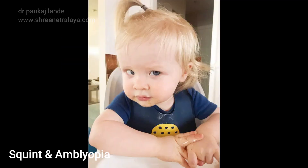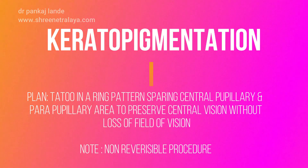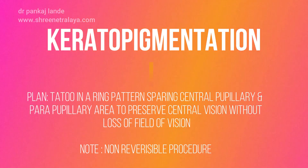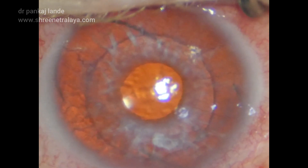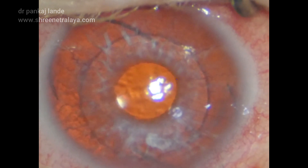So, let's see how we will manage this case. We planned keratopigmentation for this case. The plan is to do a tattoo in a ring pattern, sparing the central pupillary and parapupillary area, so that we can preserve central vision without any loss of field of vision. Please do note that this is a non-reversible procedure.